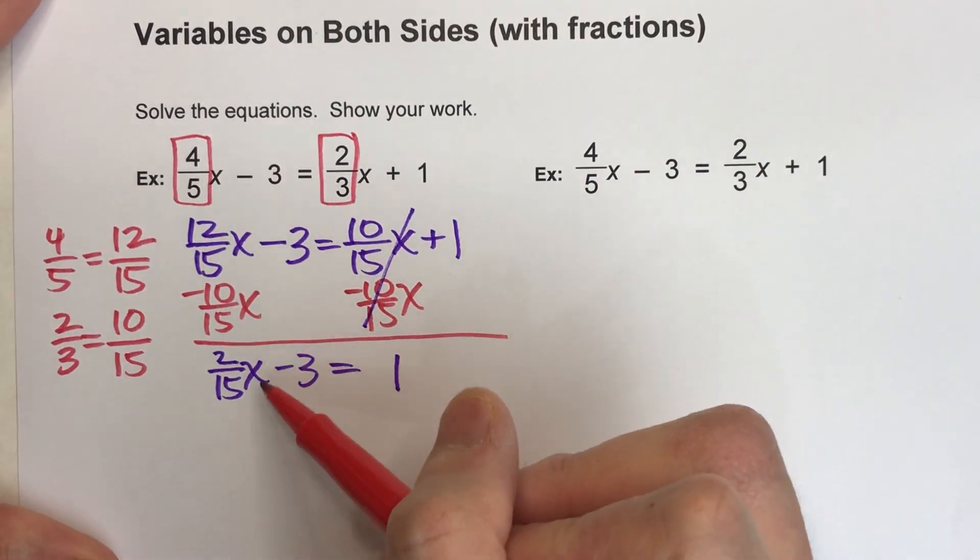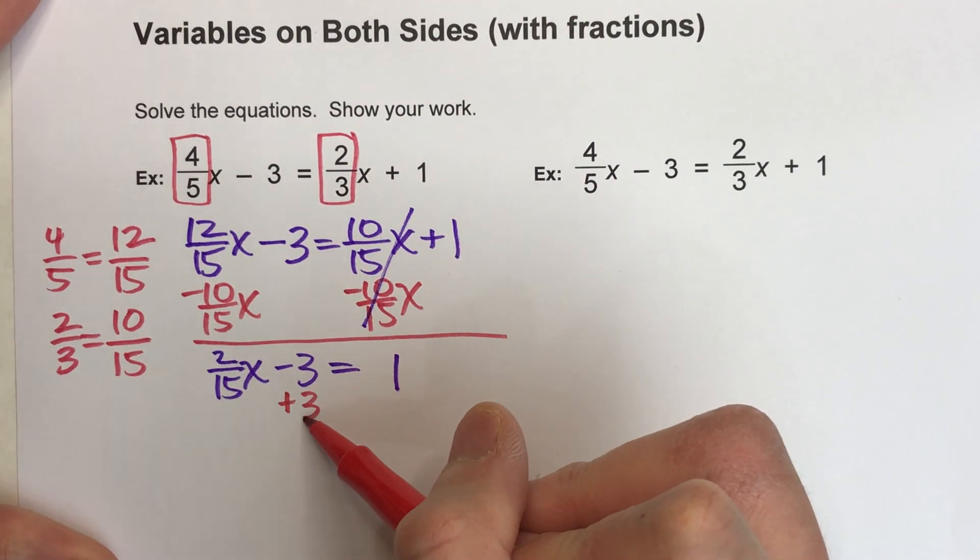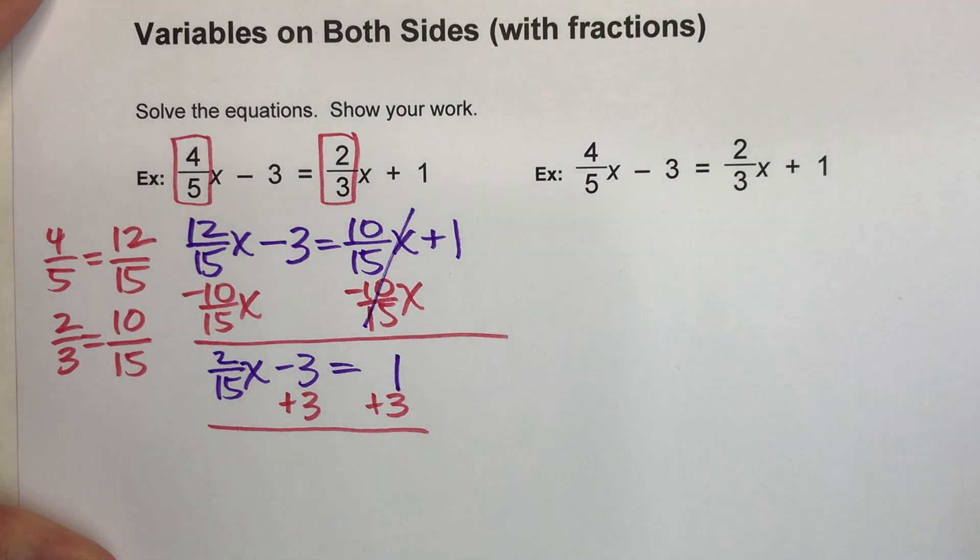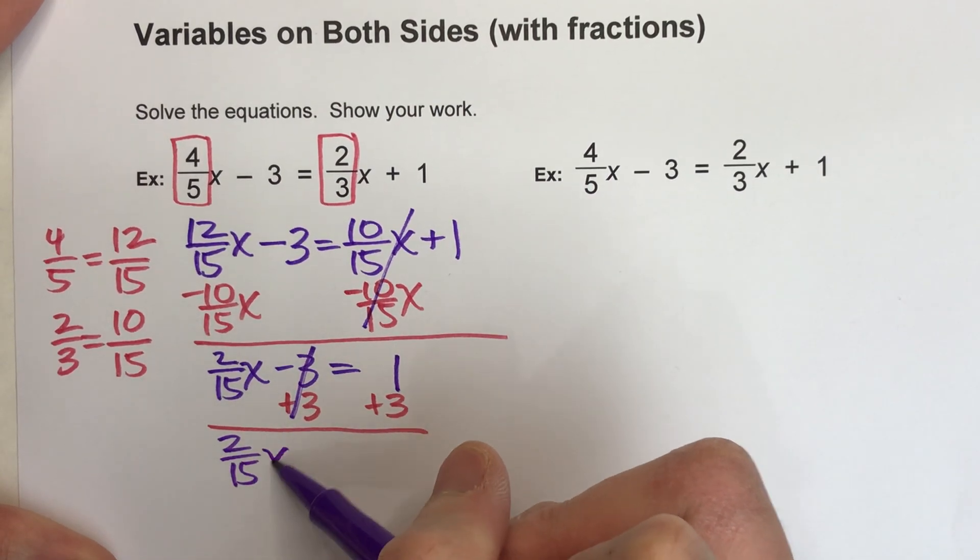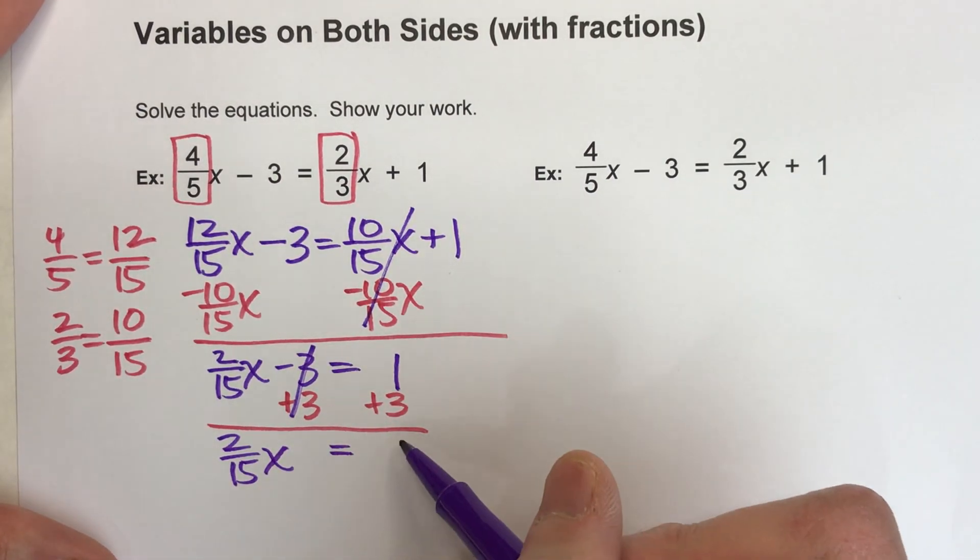Now I'm going to undo the minus 3, so I'll add 3 to both sides of the equals sign. When I do that, the 3's undo each other, 2/15x drops down, equals drops down, and this is 4.